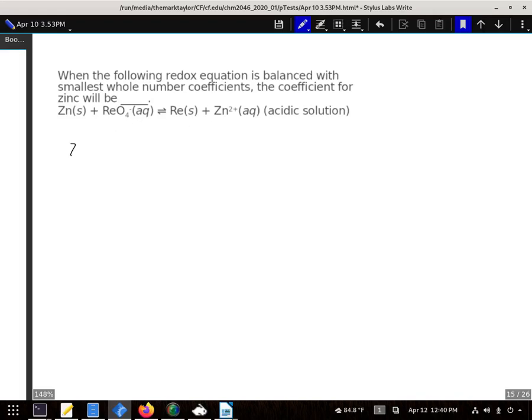All right, to figure this out, we need to actually balance our two half reactions. The zinc one's probably easiest of the two because we really just need to add the two electrons there. And that half reaction is now fine.